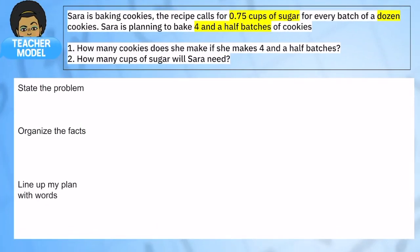Let's see it in action using SOLVE again to just think through the problem. And this problem has one of my favorite names in it, the name Sarah. Sarah is baking cookies and the recipe calls for 75 hundredths cups of sugar for every batch. So every time she has a batch, she's putting in 75 hundredths of a cup. And for every batch of a dozen cookies.